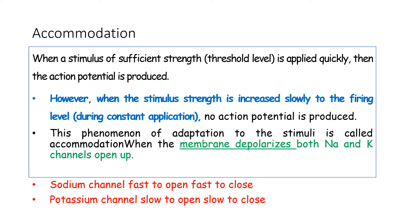The property of accommodation states that if a threshold stimulus is applied quickly, an action potential is produced. However, if the stimulus is slowly rising to the threshold level, it fails to produce an action potential. The basis for this accommodation lies in the sodium and potassium channels. Sodium channels cause the phase of depolarization, whereas potassium channels are responsible for repolarization. Whenever a stimulus is applied quickly, more sodium channels open, resulting in more depolarization than repolarization, and an action potential is produced.